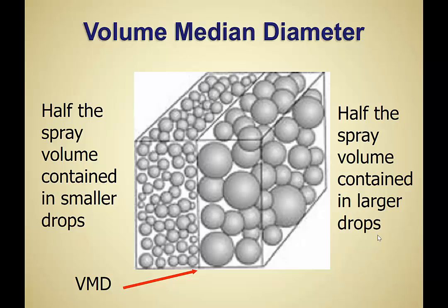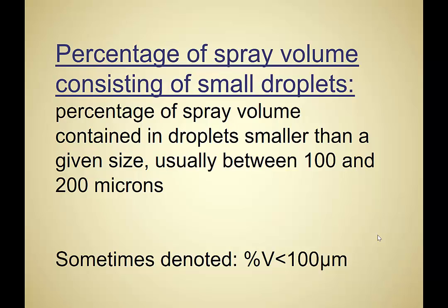The easiest way to think about VMD is as your average droplet size. If a label says apply using a 400-micron droplet, you'd set up your sprayer so the VMD is as close to 400 microns as possible. Another way to describe the droplet spectrum is the percentage of spray volume consisting of small droplets — denoted as percent V less than 100 microns. This tells you what percentage of the spray volume is coming out in droplets smaller than 100 microns, which is our drift cutoff point.